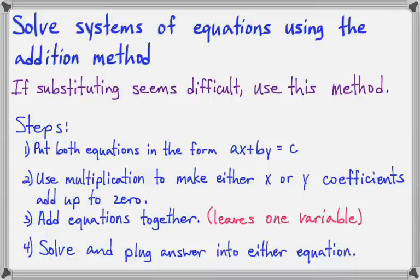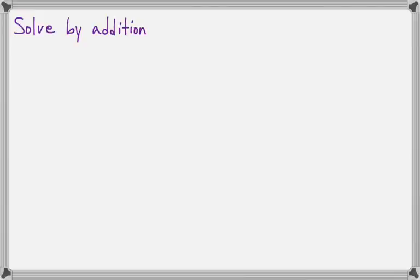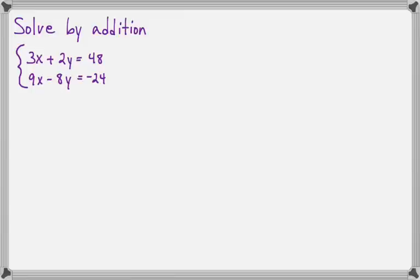Let's look at an example and bring it all together. We will solve 3x plus 2y equals 48 and 9x minus 8y equals negative 24.